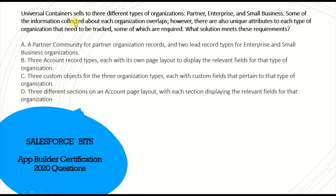Next question: Universal Container sells three different types of organizations — partner, enterprise, and small business. Some information collected overlaps, but there are also unique attributes to each type, some of which are required. The correct answer is B: create three account record types — one each for partner, enterprise, and small business — each with its own page layout. This allows relevant fields to be displayed per type, accommodating both shared and unique attributes.